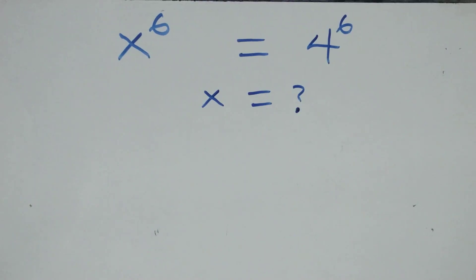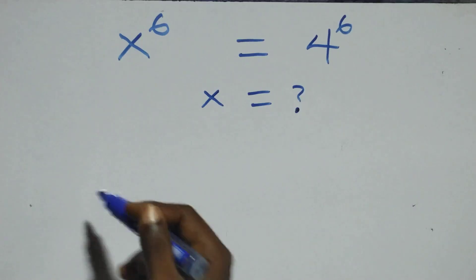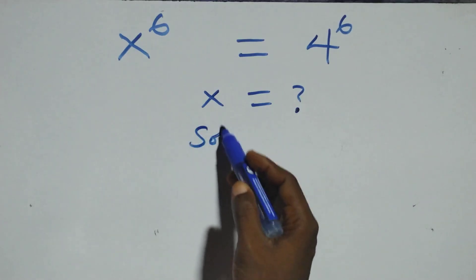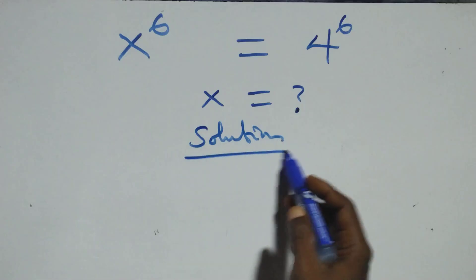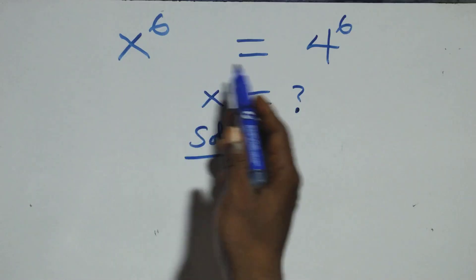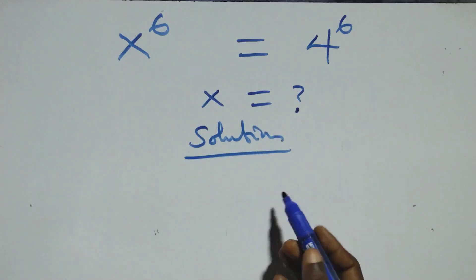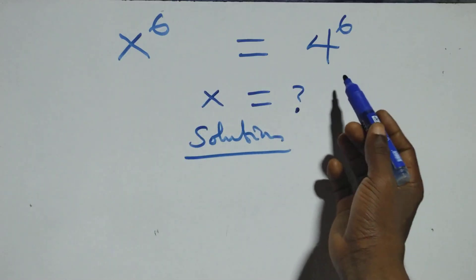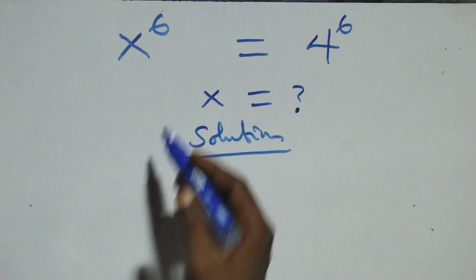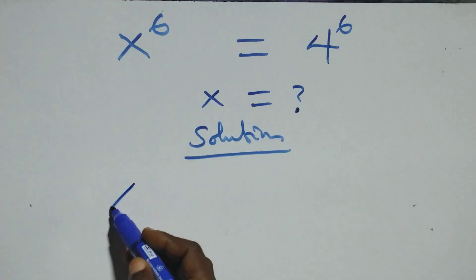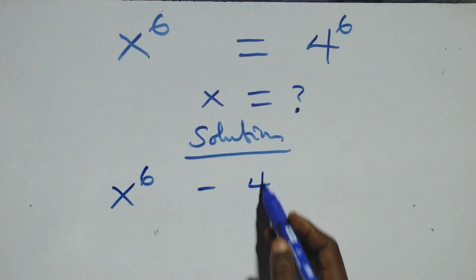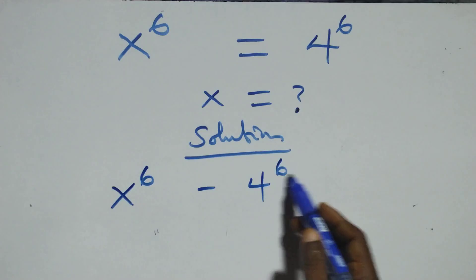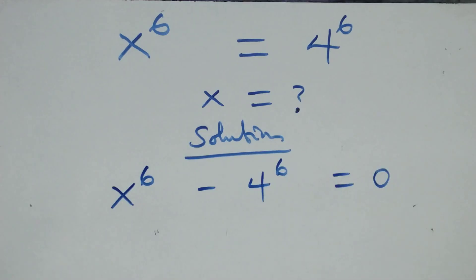Hello, you are welcome. How to solve this nice exponential equation. What we have here is x raised to power 6 equals to 4 raised to power 6. We take the right hand side to the left hand side and we have x raised to power 6 minus 4 raised to power 6 equals to 0.